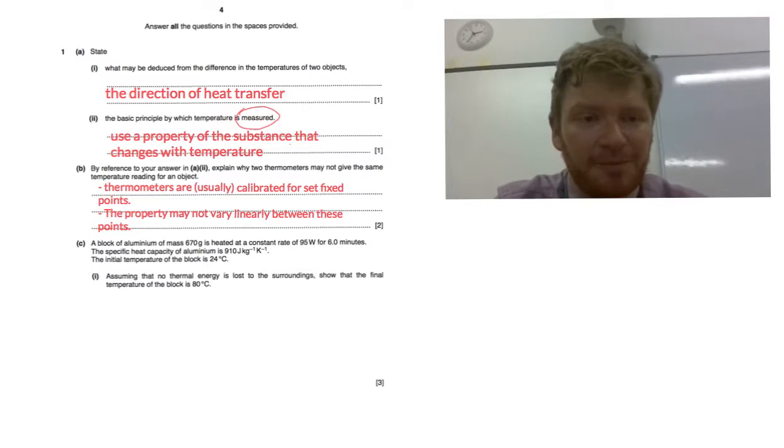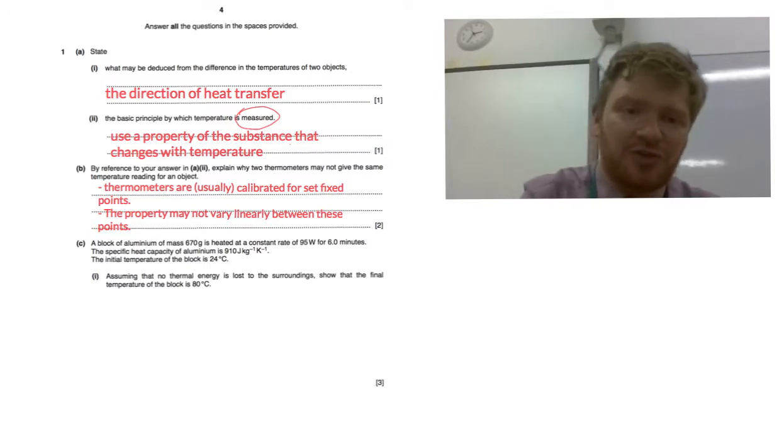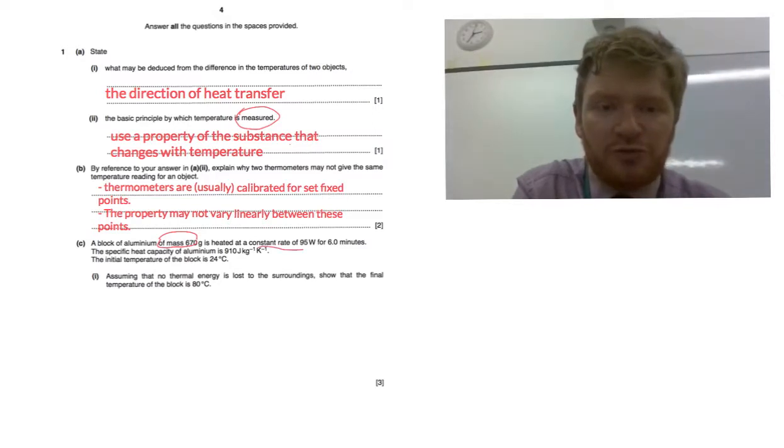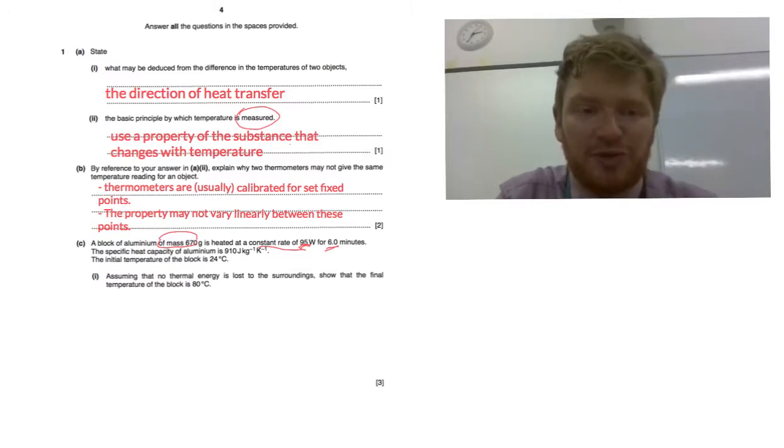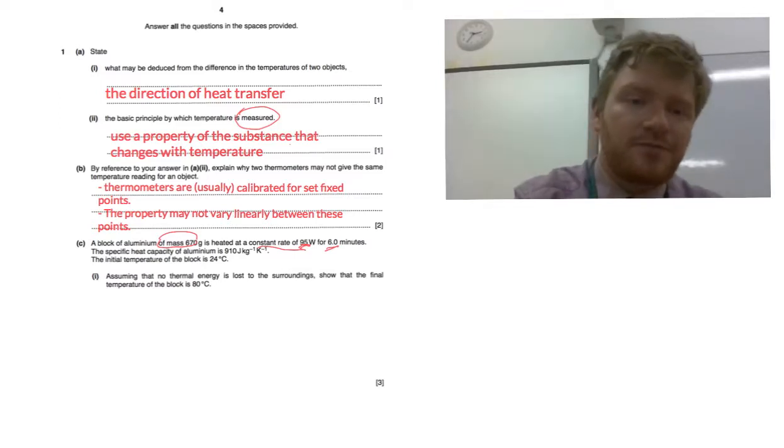Part B: the aluminum block of mass 600 grams is heated at a constant rate of 95 watts for six minutes. We've got some heat capacity, initial temperature is 24. Assume that no thermal energy is lost to surroundings, show that the final temperature is 80 degrees. Well, this is a nice gift to give you after those horrible questions. This one's quite a kind thing to put in.